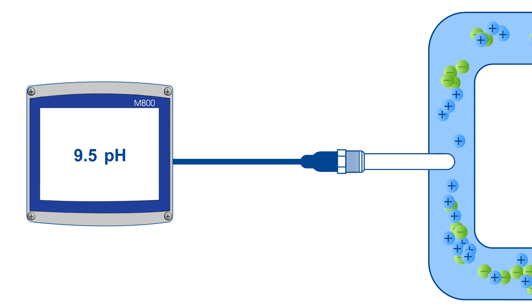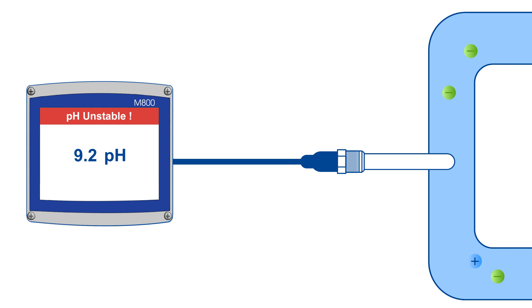However, in high purity water and steam, there are not enough ions in the water to generate a pH response, causing the pH reading to be unstable.